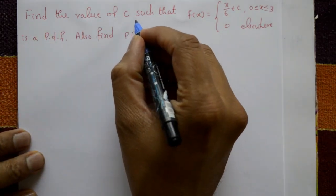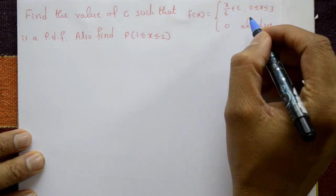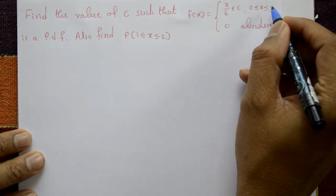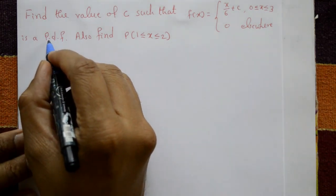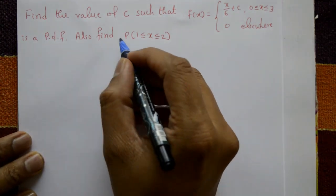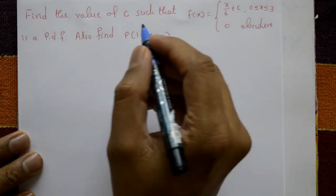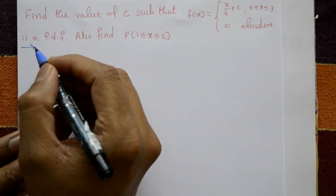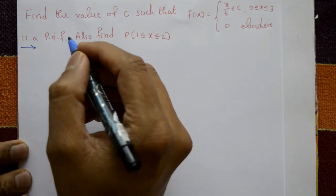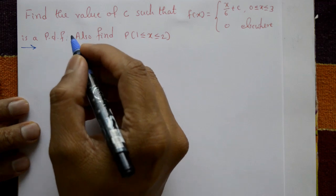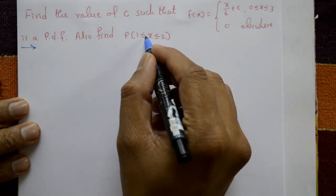Find the value of c such that f(x) = x/6 + c for 0 ≤ x ≤ 3, and 0 elsewhere, is a probability density function. Also find the probability of 1 ≤ x ≤ 2. This is a continuous probability distribution.